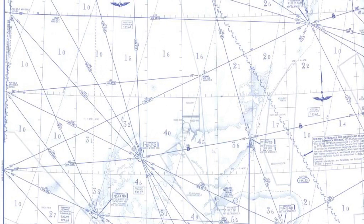Blue lines, as in the low-level charts, define the centreline of the airways, but there is no defined width to them. However, for air traffic control purposes, 5 nautical miles either side of the centreline is the accepted norm. A more detailed explanation of the chart symbols and their use will be dealt with in subsequent lessons.